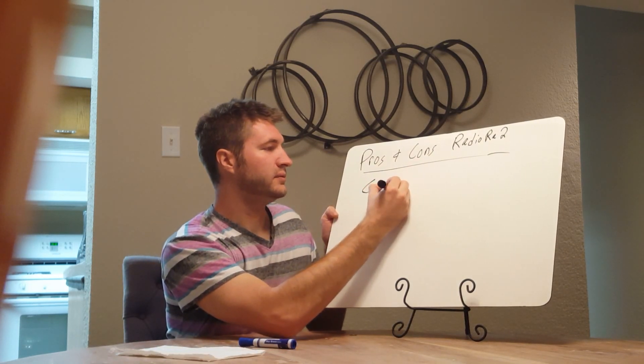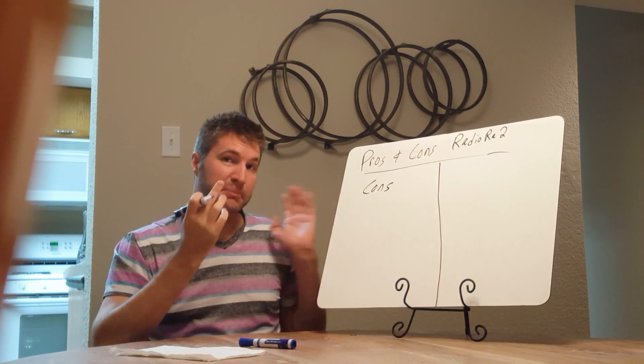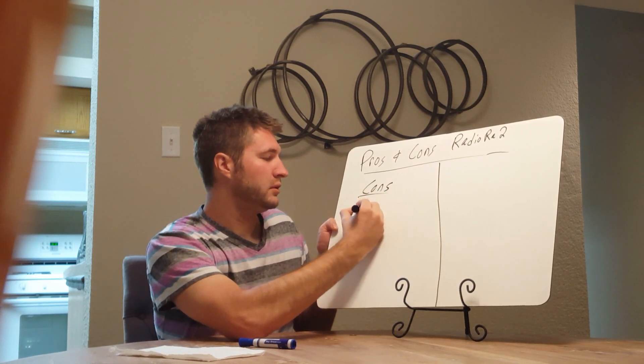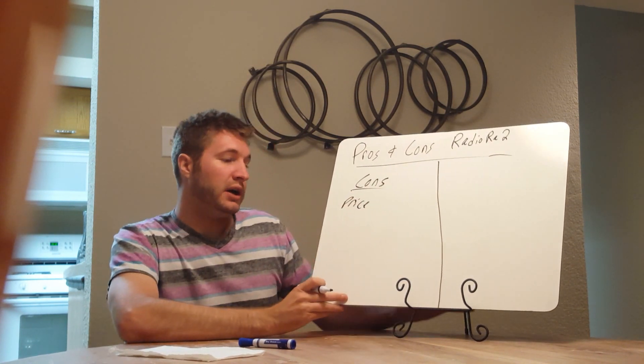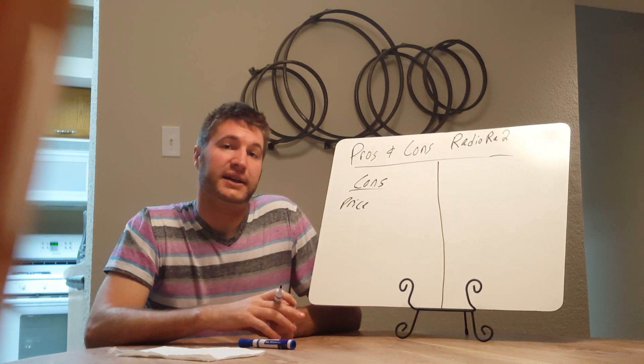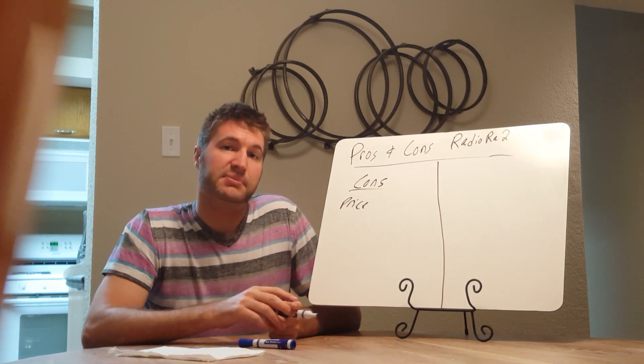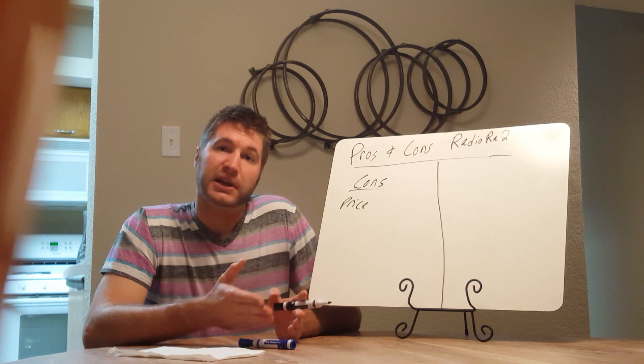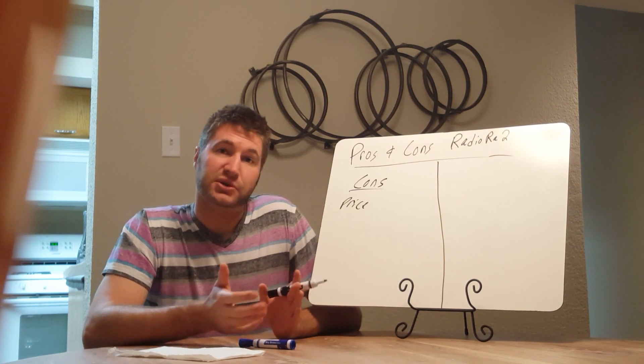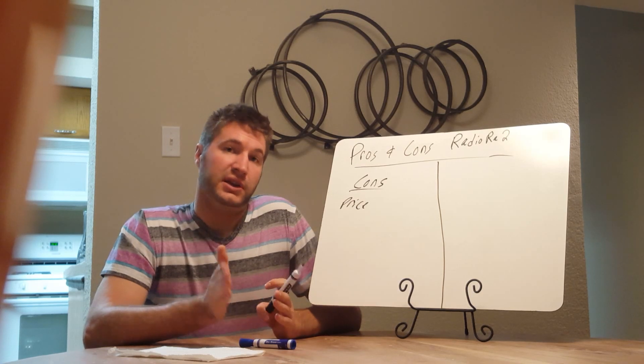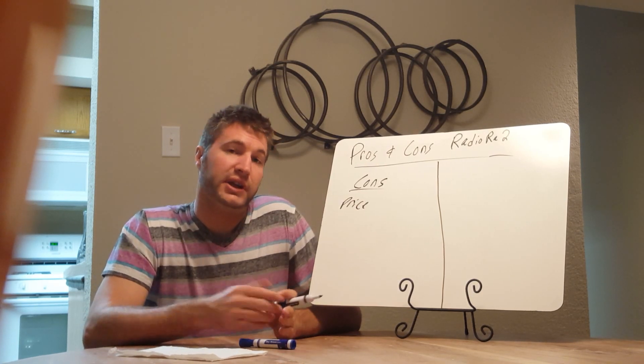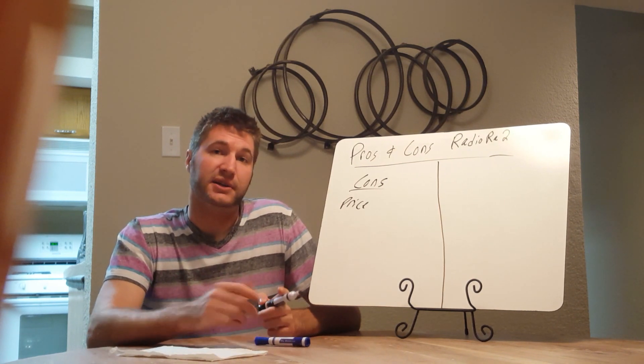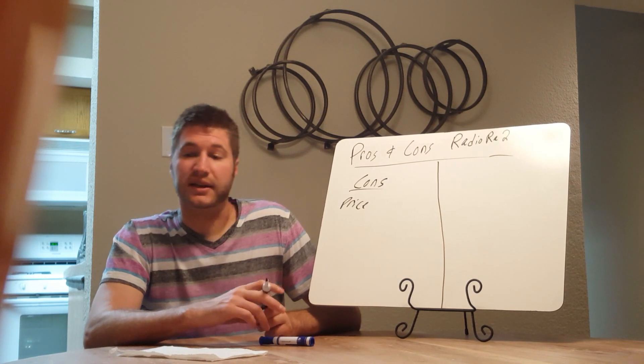First we're going to go over the cons. I would say the biggest con with RadioRA 2 is price. It's a great technology, but Lutron is very proud of it and it can be pretty pricey. You're looking at dimmers, depending on which dimmer you do, anywhere from $129 up to $249. The biggest reason people steer away from Lutron is price. They don't want to spend $200 per dimmer in their house.